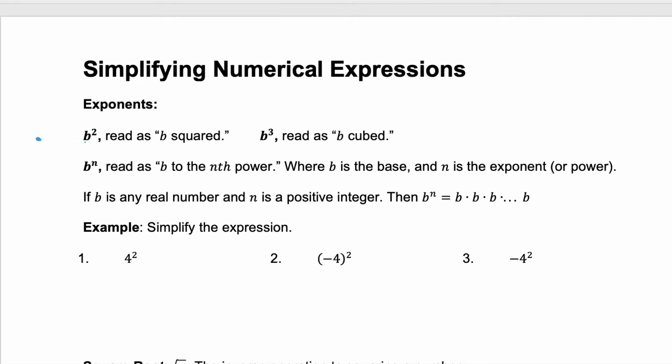Our first exponent is read b squared, and the second one is b cubed, or you can even say b to the power of three. Whenever you have b to some other n exponent, you read that as b to the nth power. So b to the seven would be read b to the seventh power.